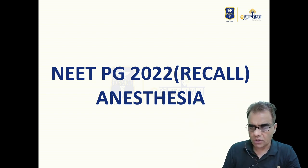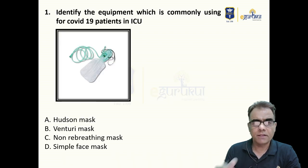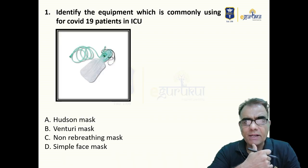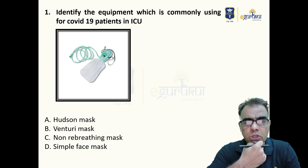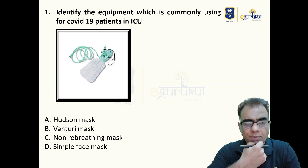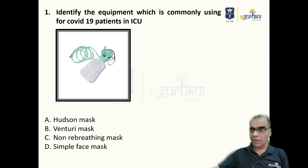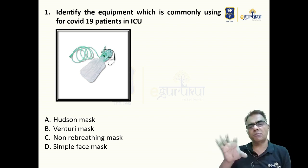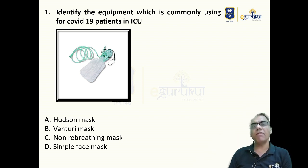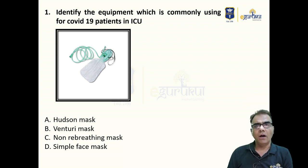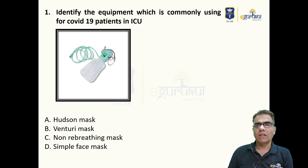So the two questions I have got so far — this is the first one: identify the equipment which is commonly used for COVID-19 patients in ICU. Options are Hudson mask, Venturi mask, non-rebreathing mask, and simple face mask. This was actually very much expected because oxygen delivery devices became very popular during COVID.